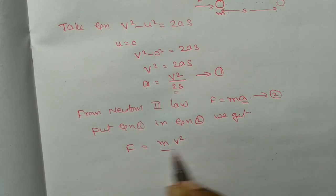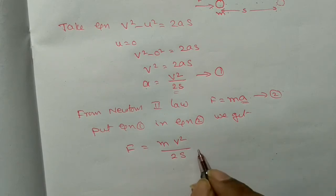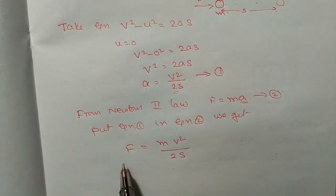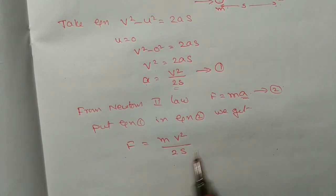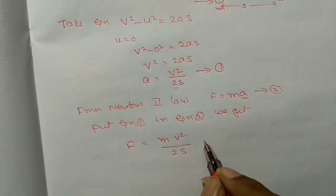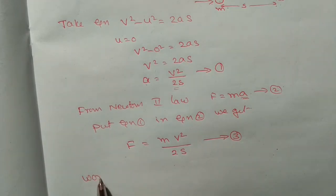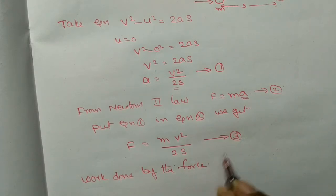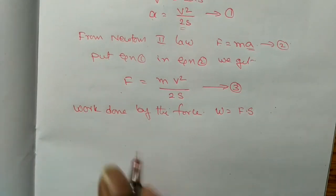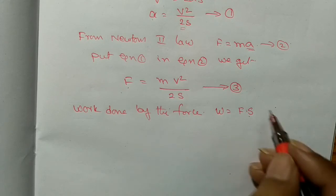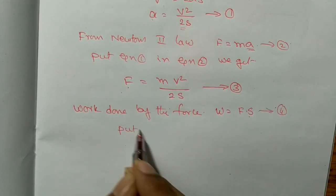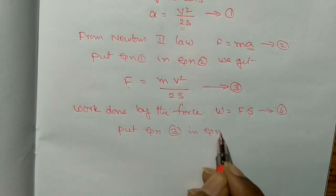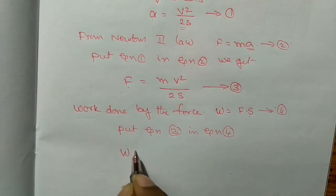Substituting A into Newton's second law: F is equal to mV squared by 2S. This is equation number 3. Now, the work done by the force is W equals F dot S — that is, force into displacement. This is equation number 4.